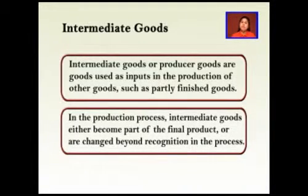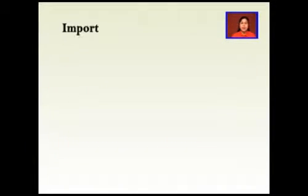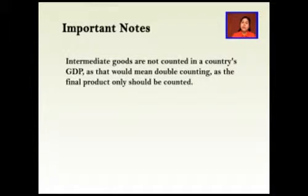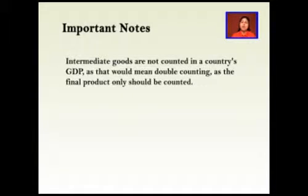Intermediate goods are never used as a final thing. An important note: you should not mix up capital goods, final goods, and intermediate goods. Intermediate goods are not counted in a country's GDP — because that would mean double counting. The final product should be counted, not the intermediate goods used to make that final product. So remember: a country's GDP will only count the final product, not the intermediate good.